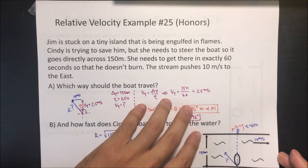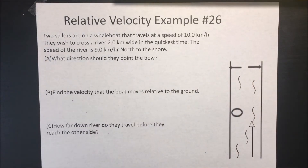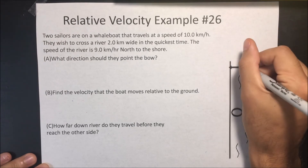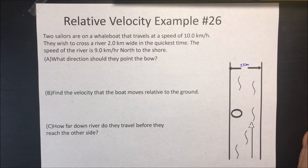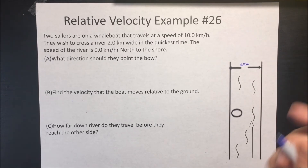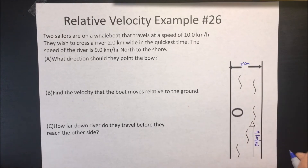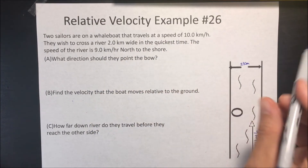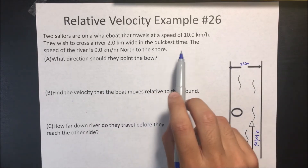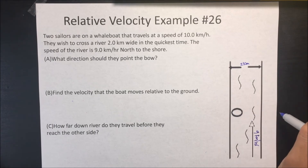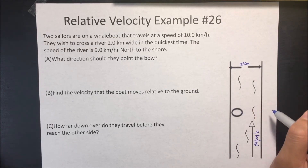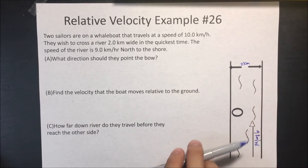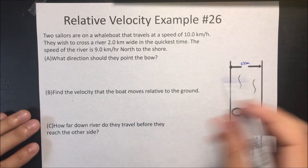Last question for this chapter: two sailors on a whalebo at that travels 10 kilometers per hour wish to cross a river 2 kilometers wide in the quickest time. The river flows 9 kilometers per hour to the north. For the quickest crossing time, you point the boat directly East — all energy goes in the x-direction.